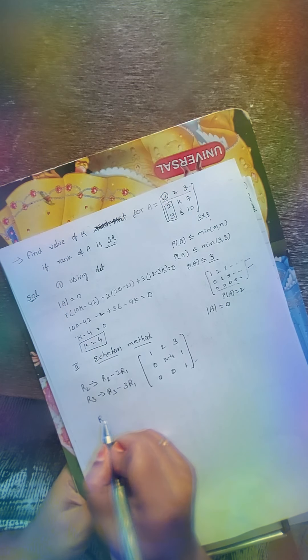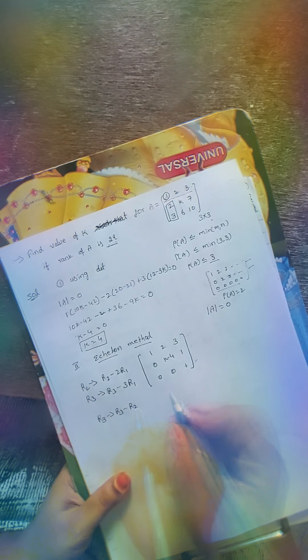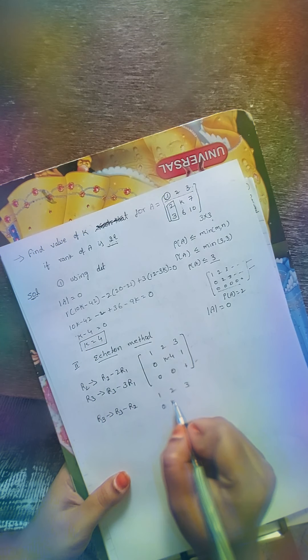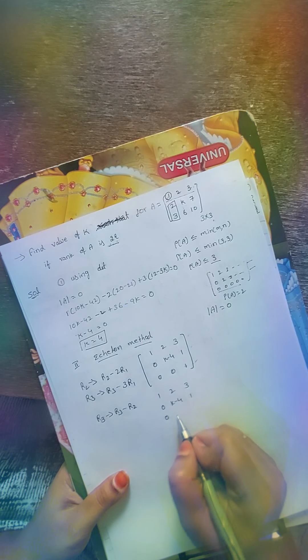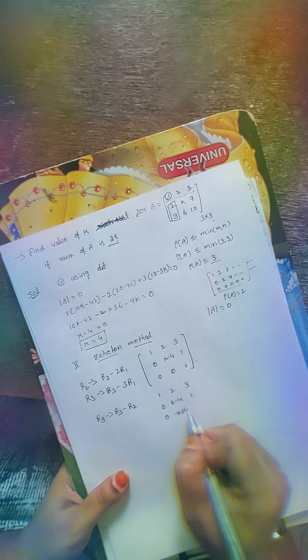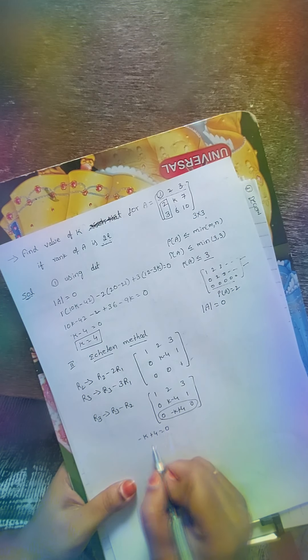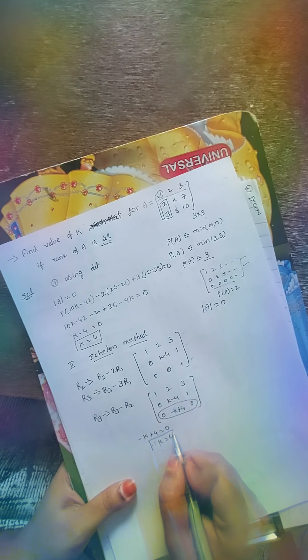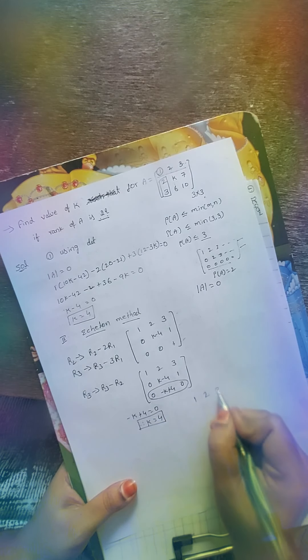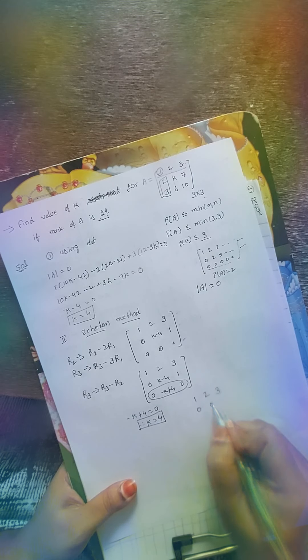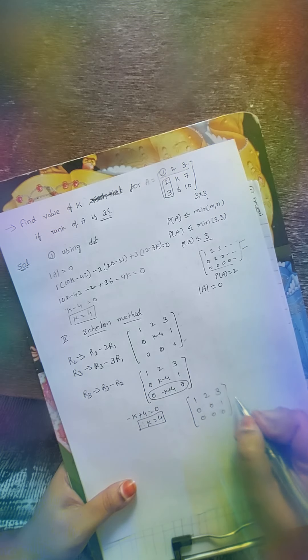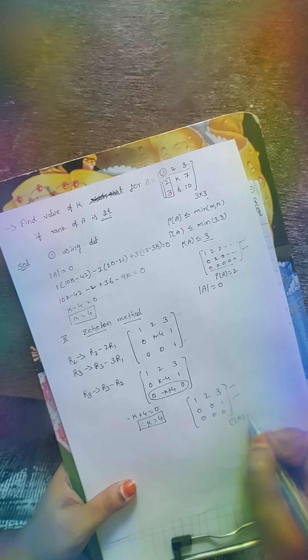Applying R3 → R3 − R2: the third row becomes (−K + 4) and 0. Since the third row must be all zeros, −K + 4 = 0, therefore K = 4. Substituting K = 4 back into the second row (K − 4 = 0), the final matrix becomes rows [1, 2, 3], [0, 0, 1], [0, 0, 0]. This matrix has only 2 non-zero rows, confirming that rank of A equals 2, as given in the problem.